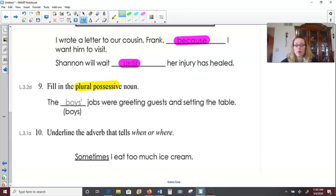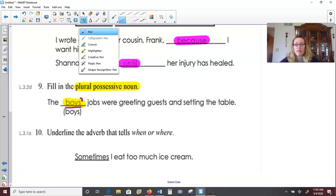Number nine. Fill in the plural possessive noun. Remember, plural is more than one. Possessive means there's ownership. So the boys' jobs were greeting guests and setting the table. Boys is showing more than one boy. And then we put the apostrophe after the S because we're talking about all of the boys and their jobs. So there's more than one boy and it's all of their jobs to greet guests. So apostrophe goes after the S.